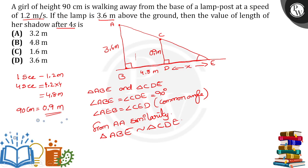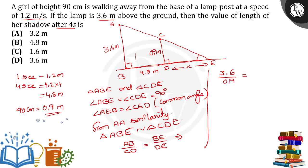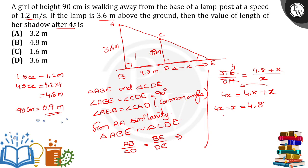When two triangles are similar, their sides are in the same ratio. So AB/CD = BE/DE. Substituting: 3.6/0.9 = (4.8 + X)/X. Since 3.6/0.9 = 4, we get by cross multiplication: 4X = 4.8 + X. Transposing X: 4X − X = 4.8, so 3X = 4.8, therefore X = 4.8/3 = 1.6 meters. So the length of the shadow of the girl is 1.6 meters. Thank you.